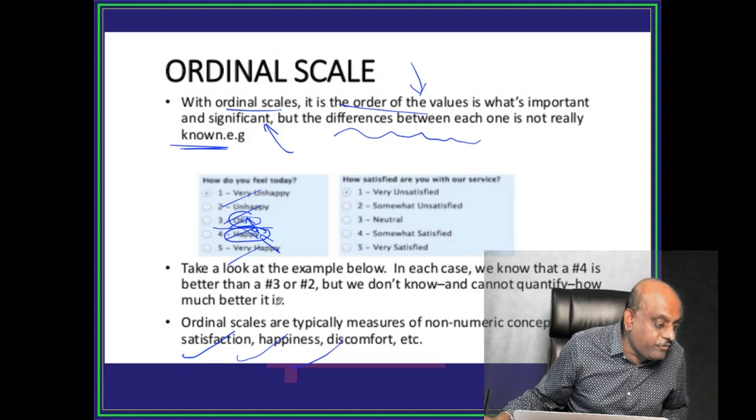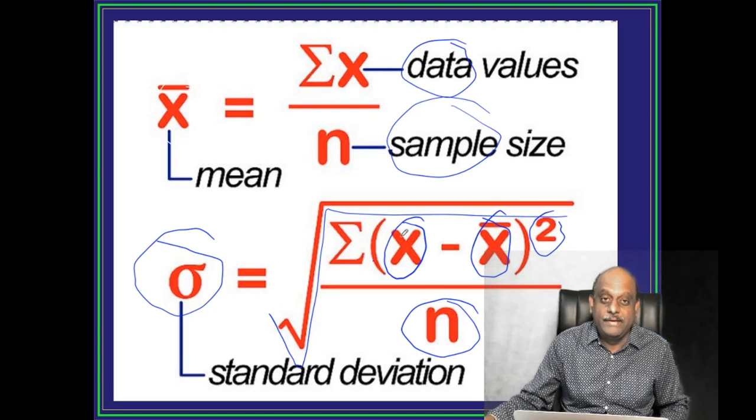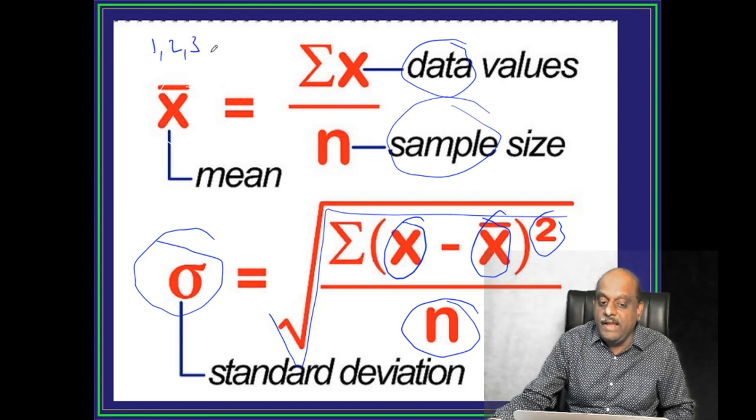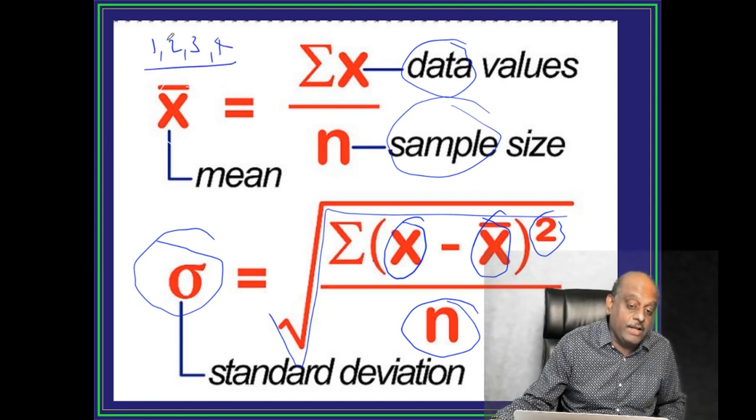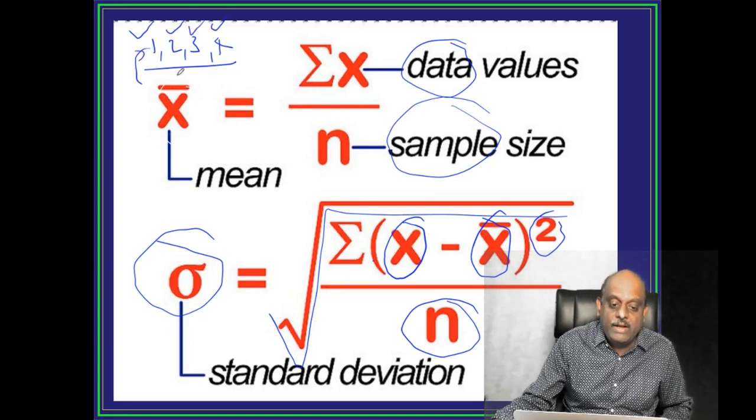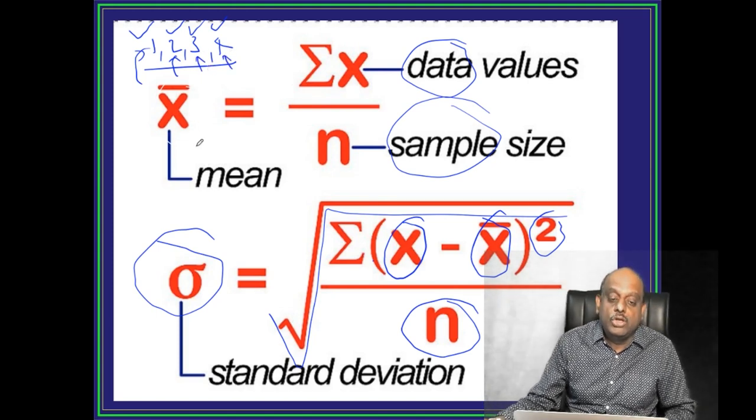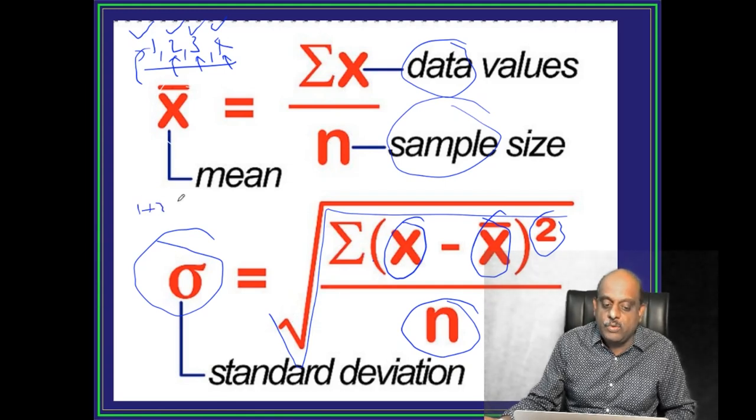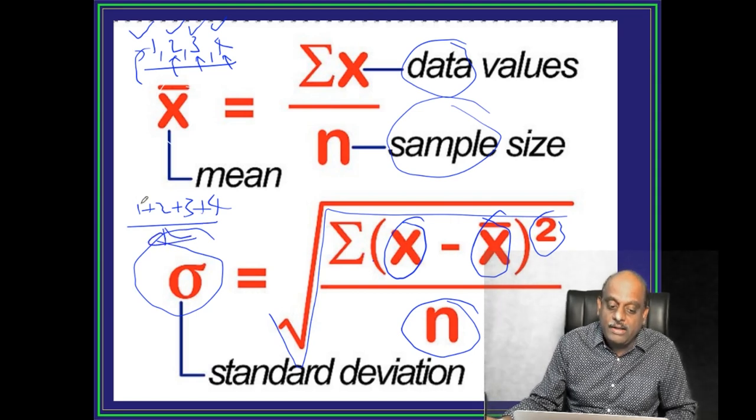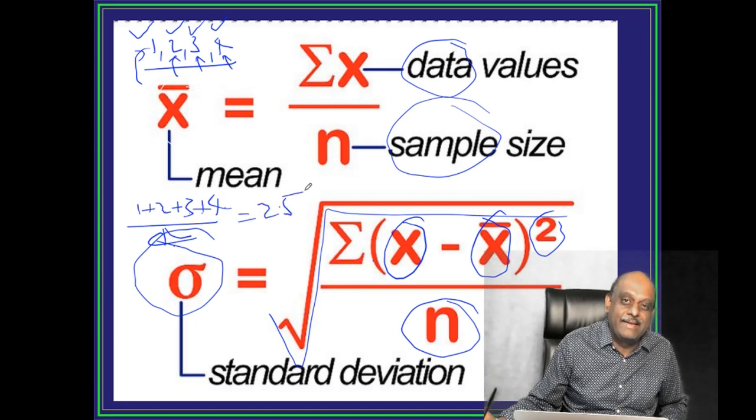Rupa Singh, sir, standard deviation formula ko ek example dijiye sir. Array, kyo nahi, kyo nahi beta? Let us say you are having 1, 2, 3, 4, 4 samples hain. E ka value 1, dusra ka 2, tisra ka 3, 4th hai 4. So, what is the mean value first of all? 1 plus 2 plus 3 plus 4 divided by 4. Now we have 3 plus 3, 6 plus 4, 10. 10 by 4 is equal to 2.5.